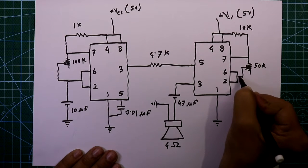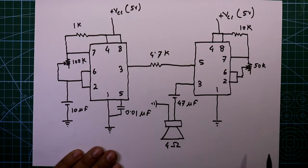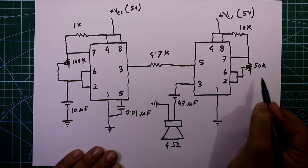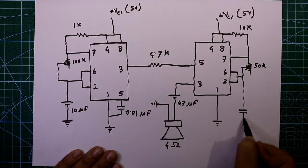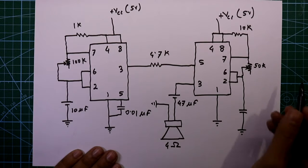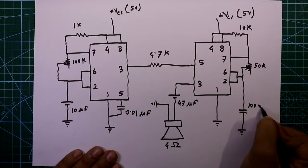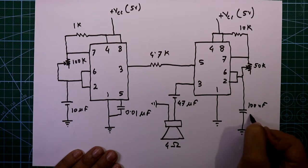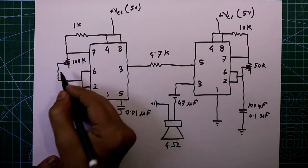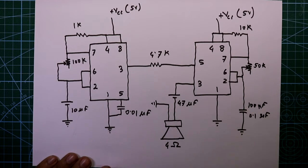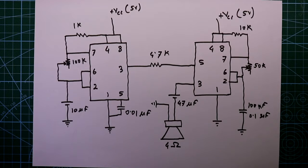The middle pin of the potentiometer is connected to pin number 6 and 2. Then one capacitor is connected and it goes to ground — the value is 100 nanofarad or 0.1 microfarad. So this is the complete circuit diagram. With these two potentiometers we can adjust the frequency of the sound.